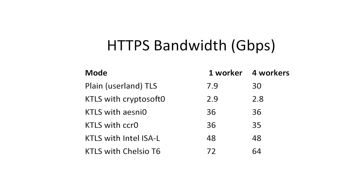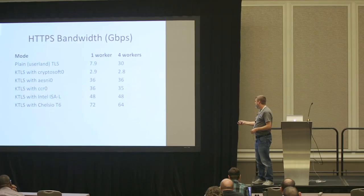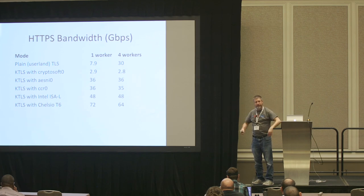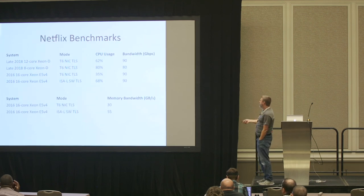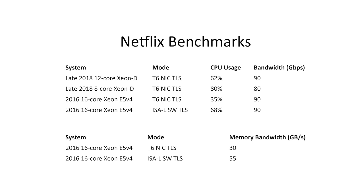Netflix has a version using Intel's ISA-L crypto library that gets a more respectable 48 gigabits. Testing with the Chelsio T6 in NIC TLS mode achieves between 60 and 72 gigabits using just one worker. Netflix's internal numbers — with additional TCP and other optimizations — get closer to 90 gigabits even with software TLS. Using the T6, they're able to reach 90 gigabits while consuming less CPU than when using ISA-L in the kernel. One of the main benefits Netflix was concerned about originally was memory bandwidth.